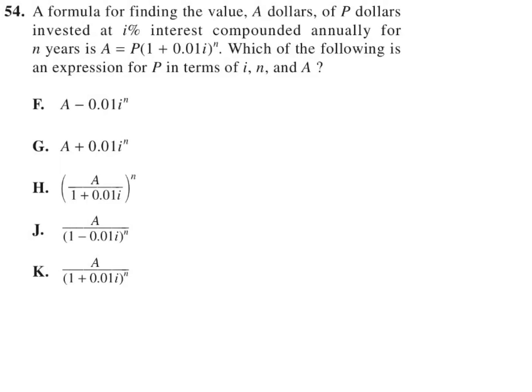A formula for finding the value A dollars of P dollars invested at I percent interest compounded annually for N years is A equals P times (1 plus 0.01I) to the N power. Which of the following is an expression for P in terms of I, N, and A?